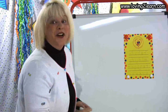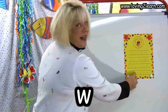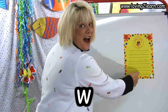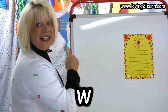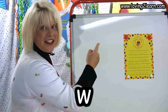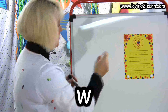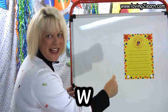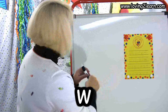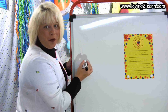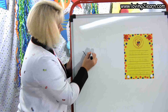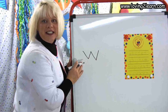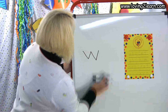The next letter is the letter W. We go slanted line down, slanted line up, slanted line down, slanted line up. Let's do it in the air: slanted line down, slanted line up, slanted line down, slanted line up. Let's write it on the wipe-off board: slanted line down, slanted line up, slanted line down, slanted line up. There is the W.